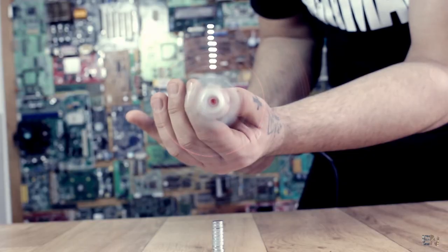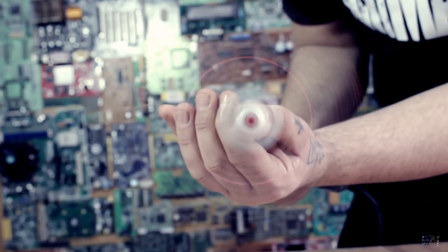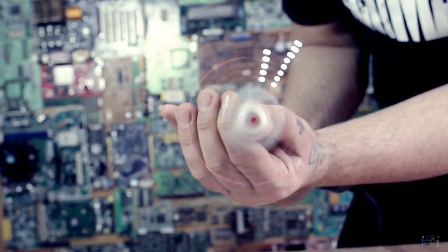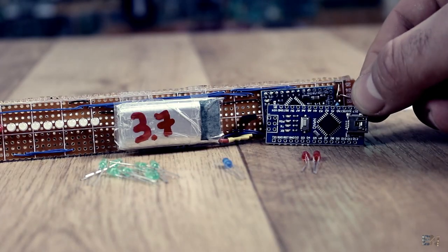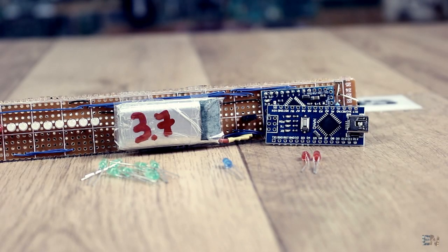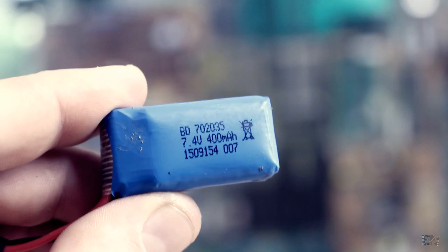But after some tests, I realized that I need more than 8MHz to make this project fast enough. For that, this time I will use the Arduino Nano, with a 2S 7.4V battery connected to the VIN pin.